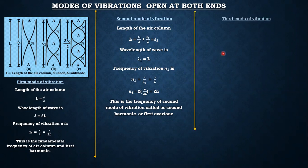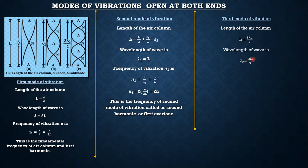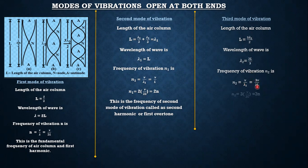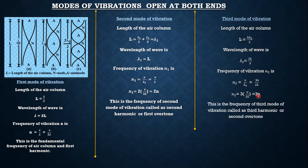For the third mode of vibration, capital L equals 3 lambda two by 2, so wavelength lambda two equals 2L by 3. The frequency n2 equals v by lambda two, substituting gives 3v by 2L. Taking 3 outside the bracket gives 3 times v by 2L, which equals 3n. This is the third harmonic, also called the second overtone.